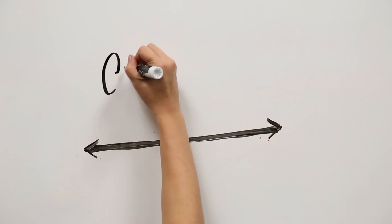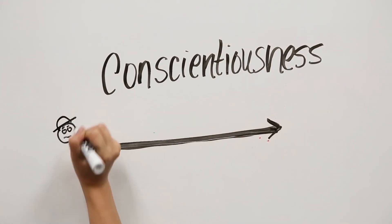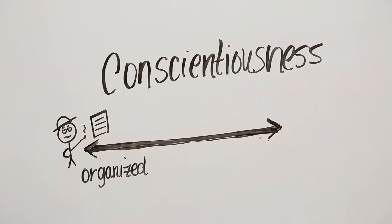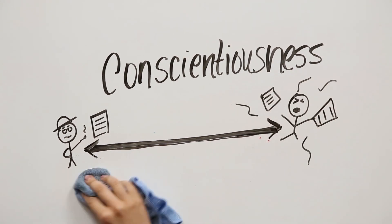Conscientiousness is one of the last personality dimensions. Conscientiousness is the tendency of a person to be organized and detail-oriented versus disorganized or messy.